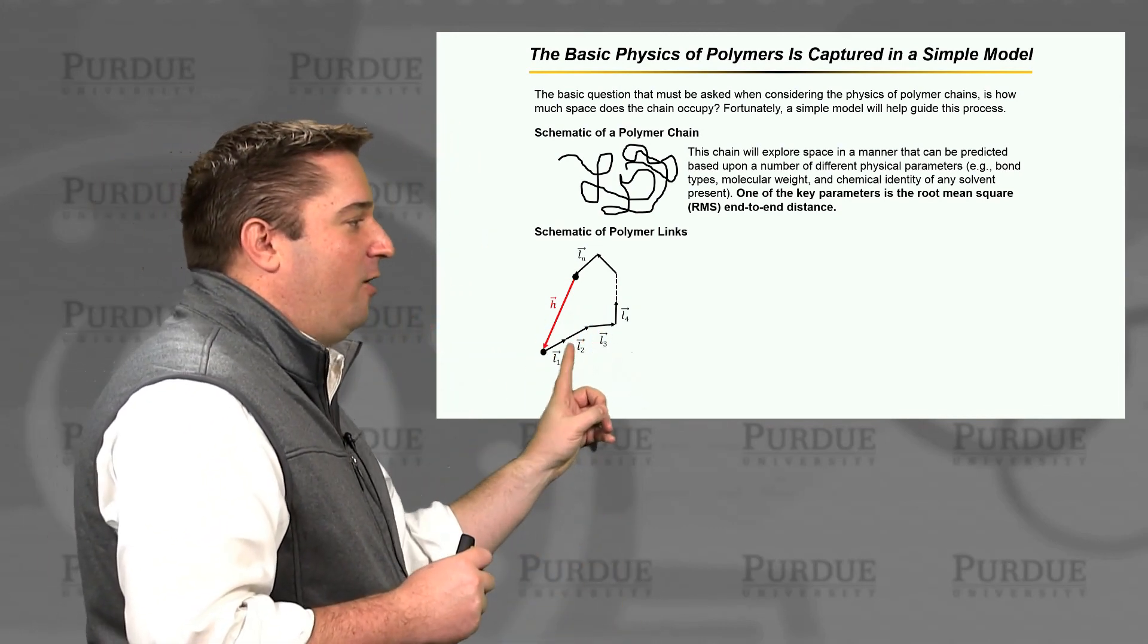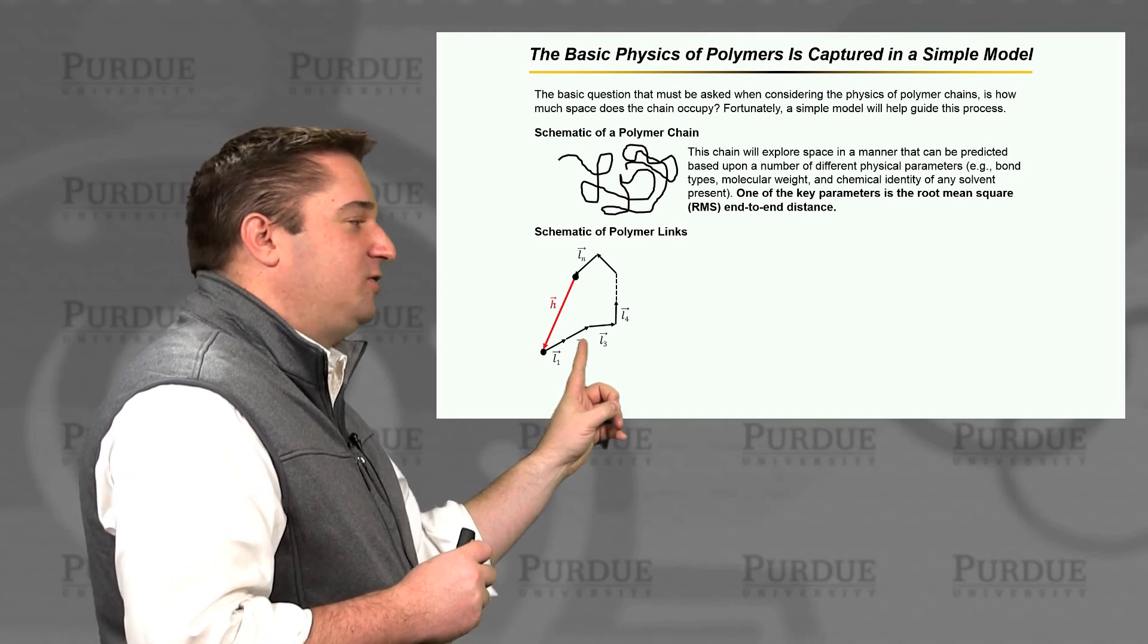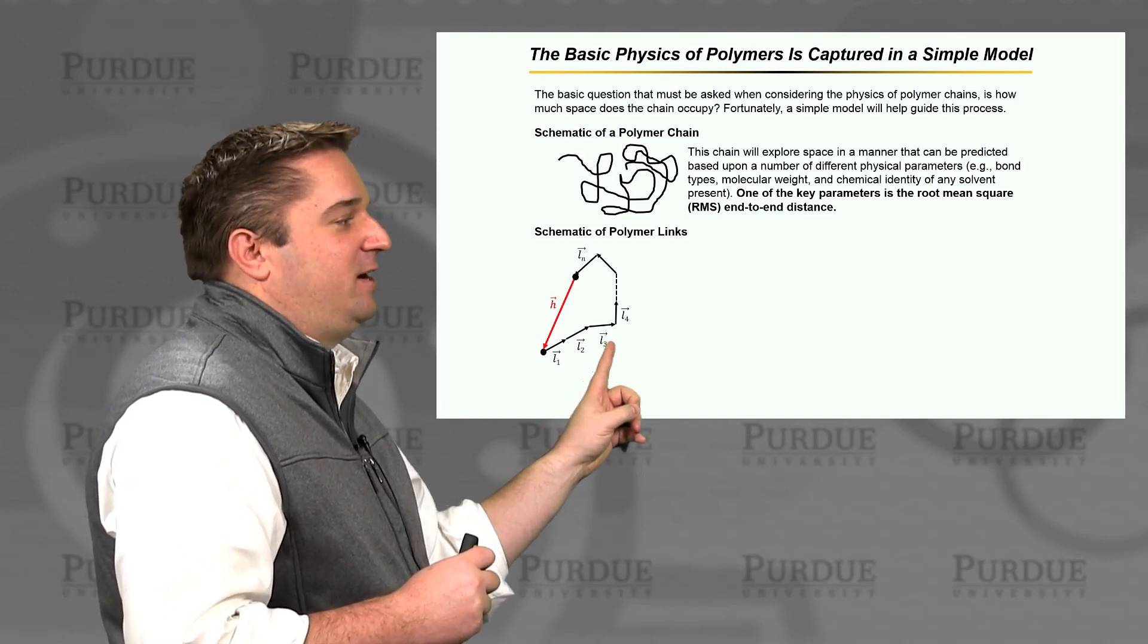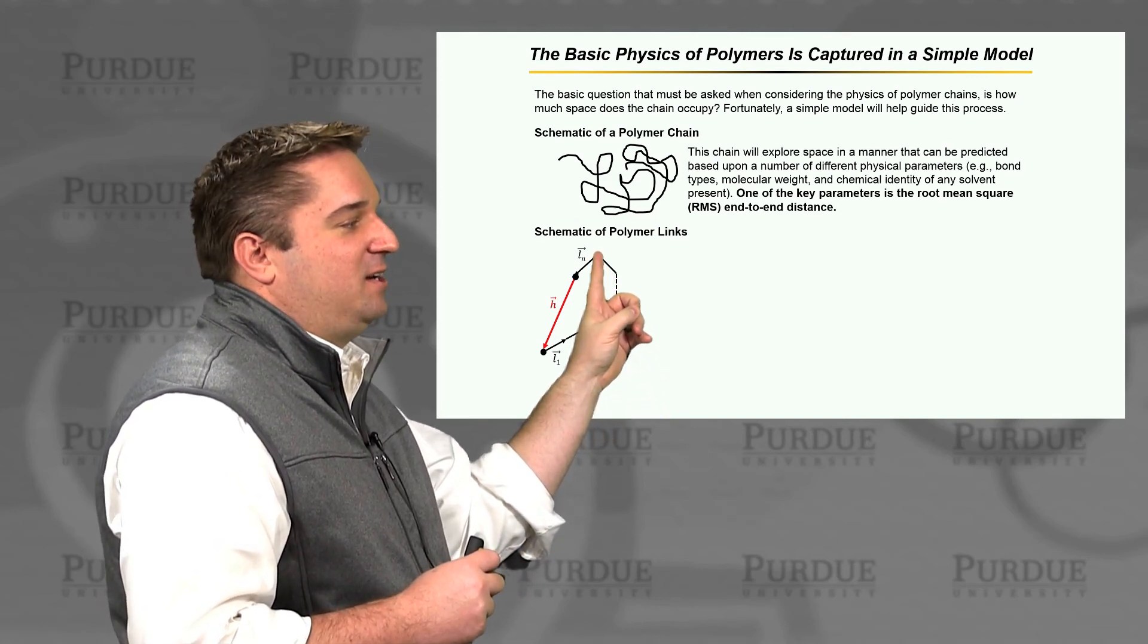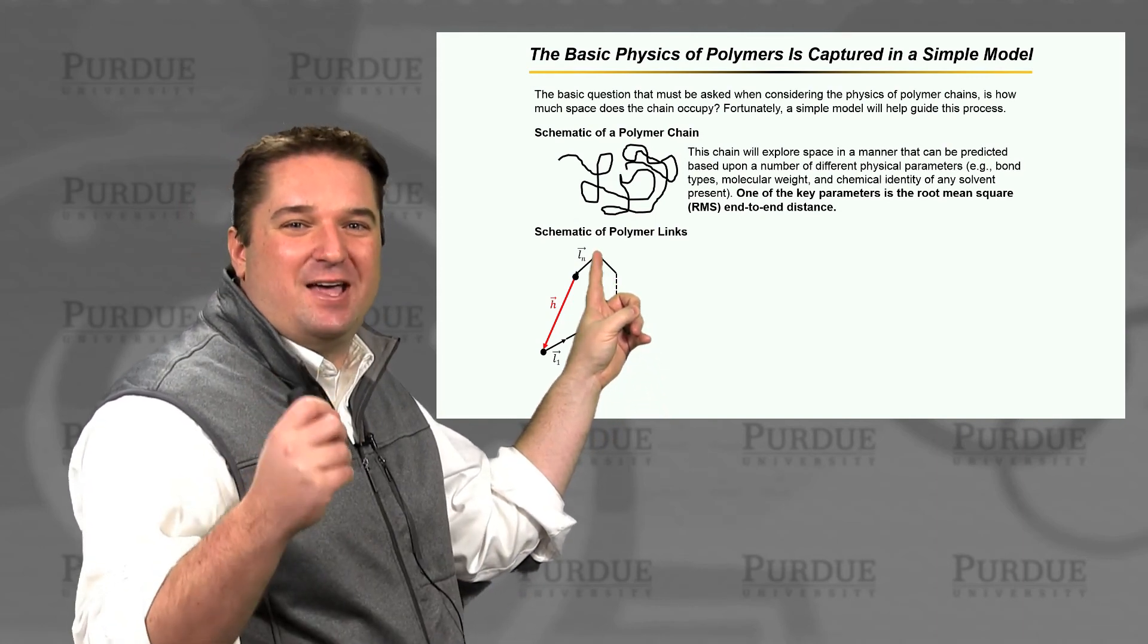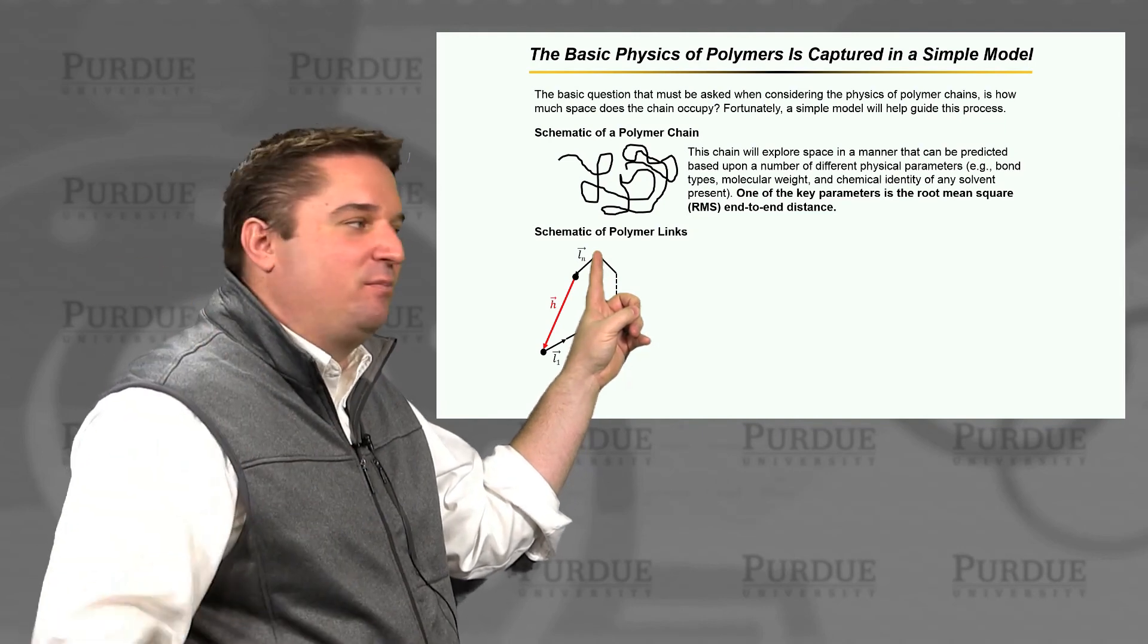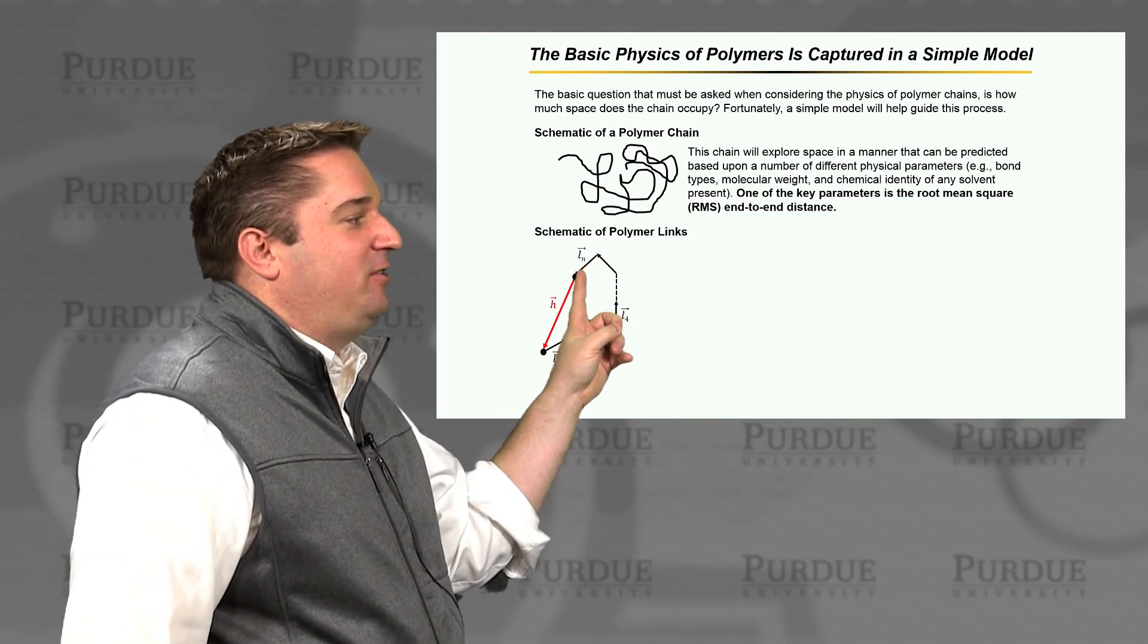And you can see here that L1 points this way, L2 points in the general same direction, L3 takes a slight turn, L4 takes a 90-degree turn. And then we keep marching along our polymer chain until we get to the final one, I'll call that L sub n. So we're going to have n number of links, and that has a final distance here.